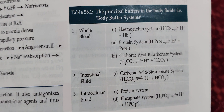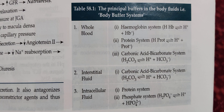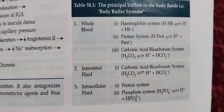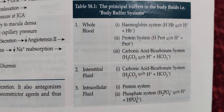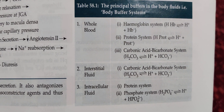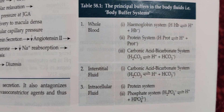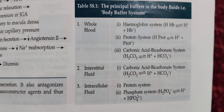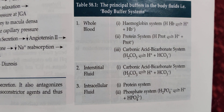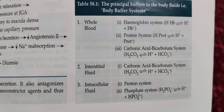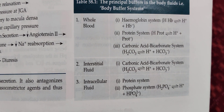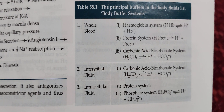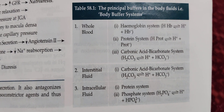Now let's see the principal buffers in body fluids. In whole blood, the main buffer is hemoglobin, followed by proteins, and then the carbonic acid–bicarbonate system. In the interstitial fluid, we have only the carbonic acid–bicarbonate system. In the intracellular fluid, we have proteins and the phosphate system.